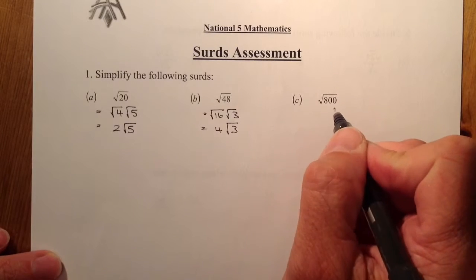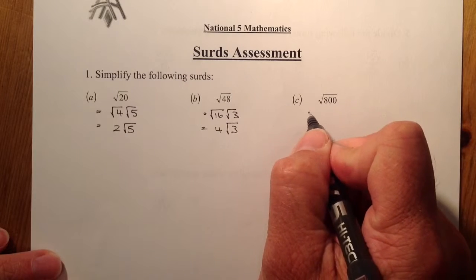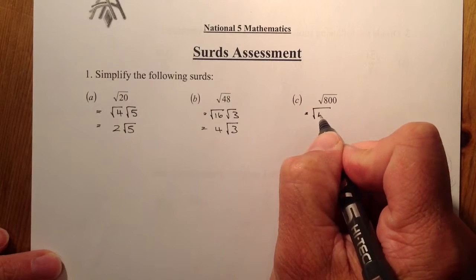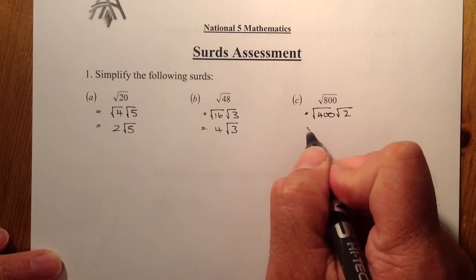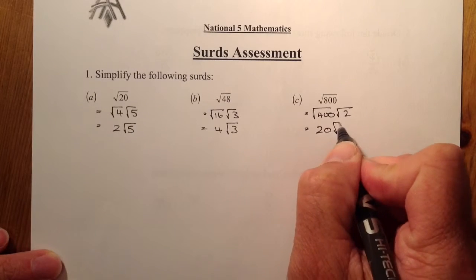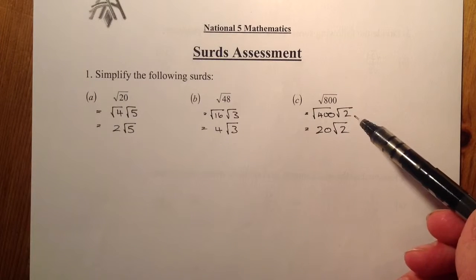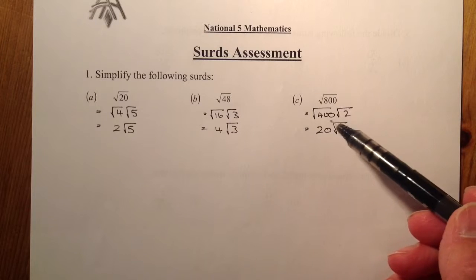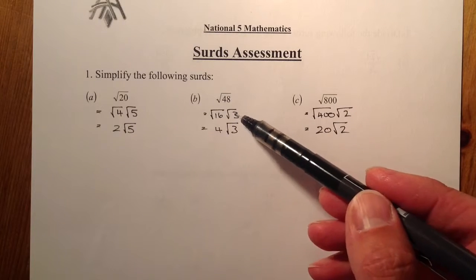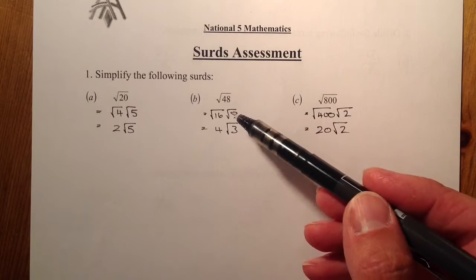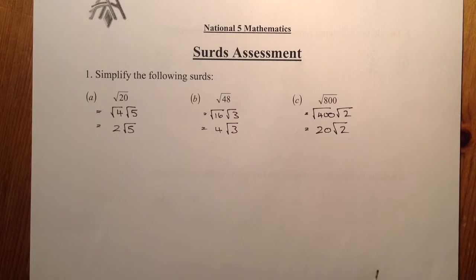For root 800, I could use 100 and 8, but there's a better solution. I've got root 400 and root 2. The square root of 400 is going to be 20, so it's going to be 20 root 2. Now, if you used 100 and 8, or 4 and 12 for root 48, you could simplify those down further again to get the final answer. But these are the final answers I'd be looking for here.